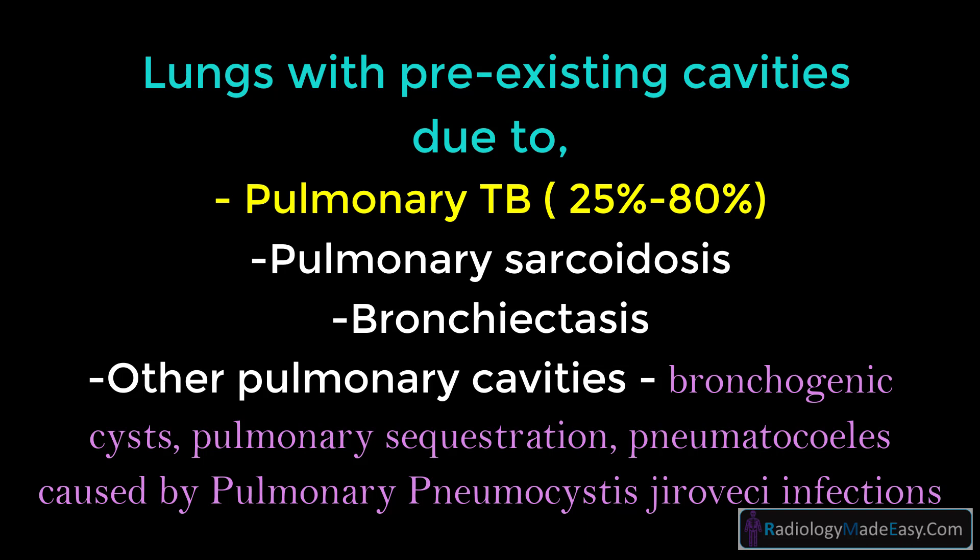Pre-existing cavities due to pulmonary tuberculosis are most common, accounting for 25% to 80% of cases. Other causes include pulmonary sarcoidosis, bronchiectasis from any cause, bronchogenic cysts, pulmonary sequestration, and pneumonia caused by Pneumocystis jirovecii infections.